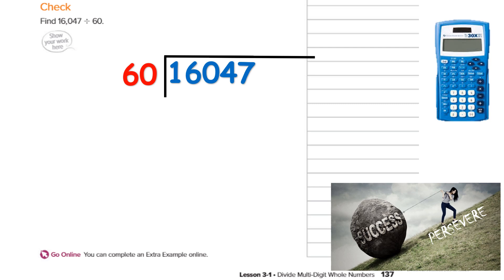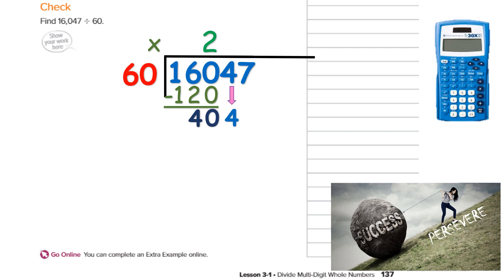I go through the same steps every time. Will 60 go into 1? No. Will 60 go into 16? No. But 60 will go into 160. So the answer has to go above the 0. When I type 160 divided by 60, I get 2 because 2 times 60 is 120. Do I have a remainder? Yes, it's okay — I have numbers to bring down. So I bring down the 4. Now I take 404 divided by 60 and get 6. I ignore the stuff after it. 60 times 6 is 360, then I subtract.